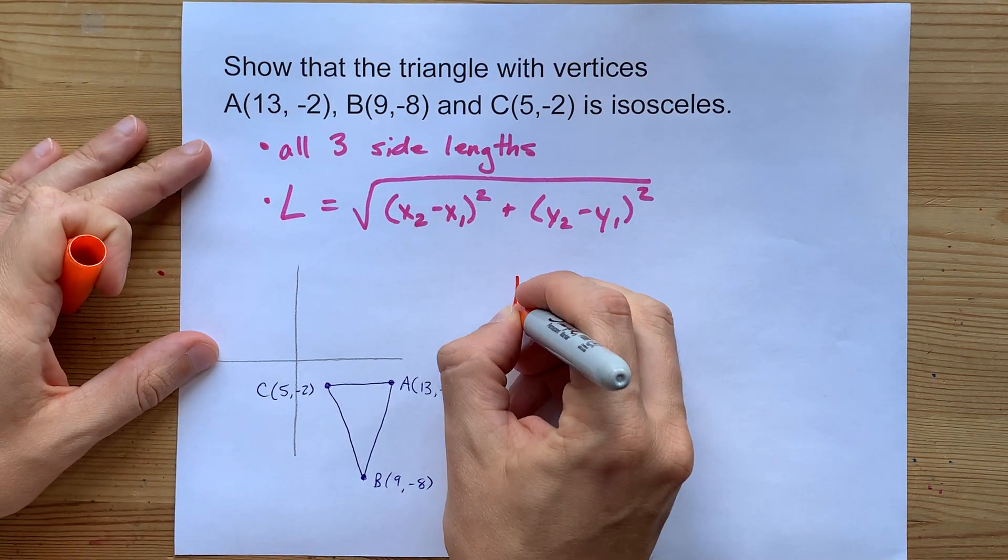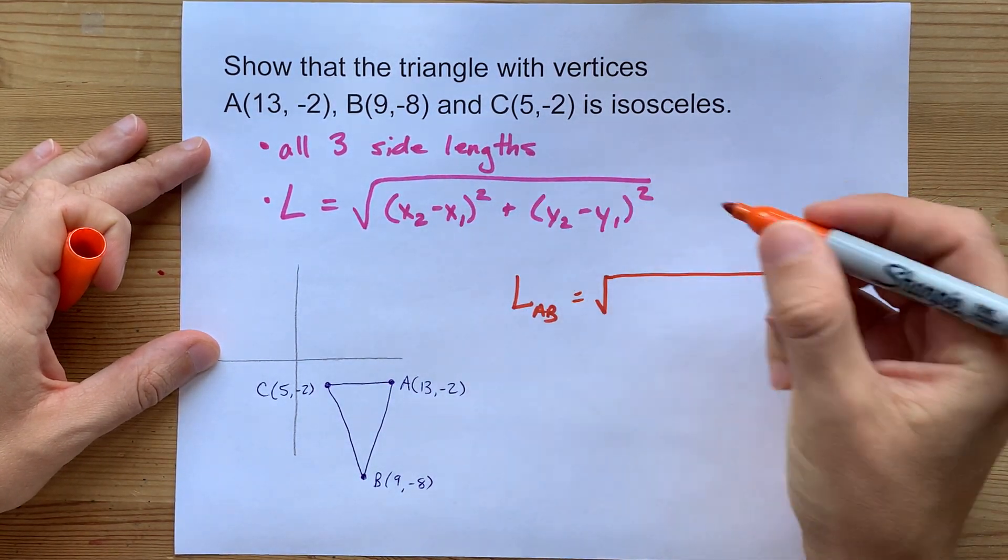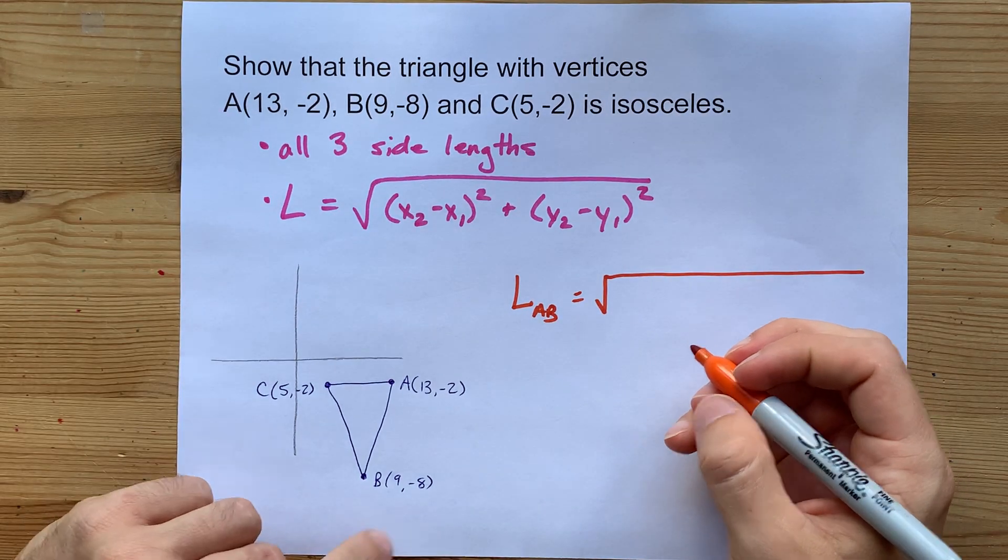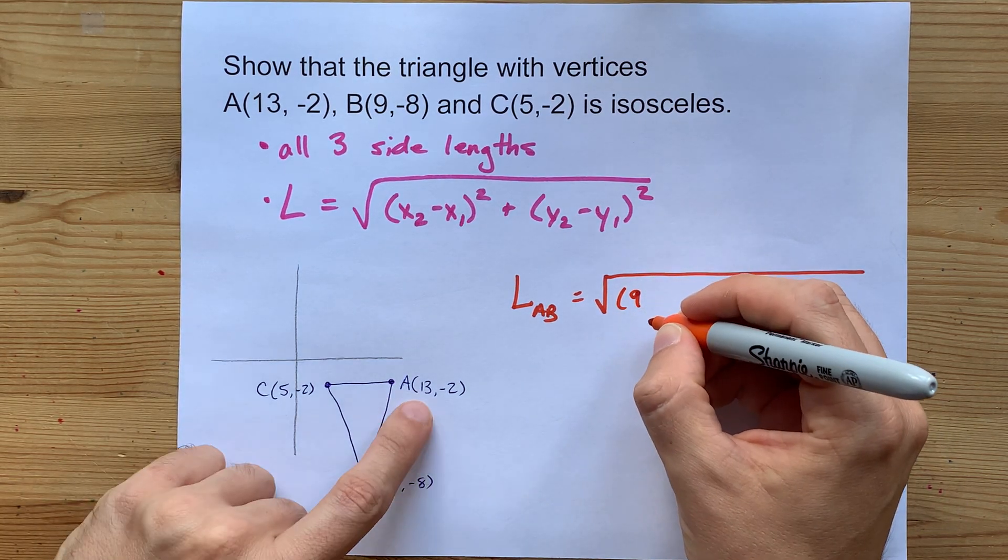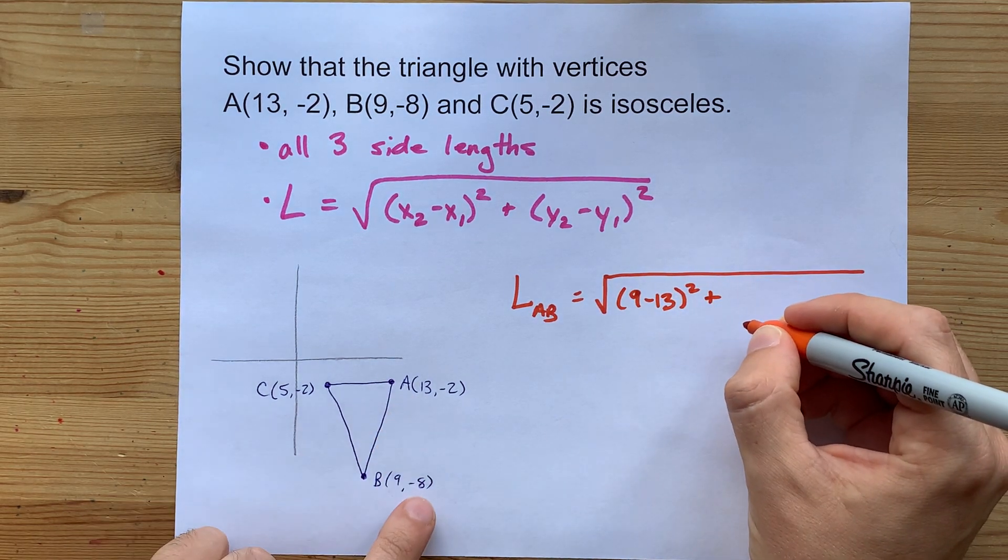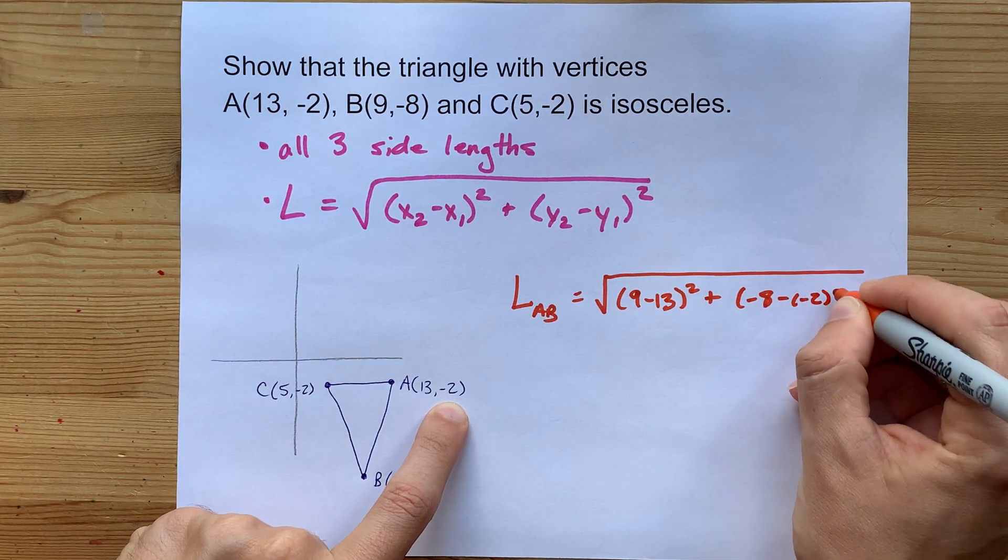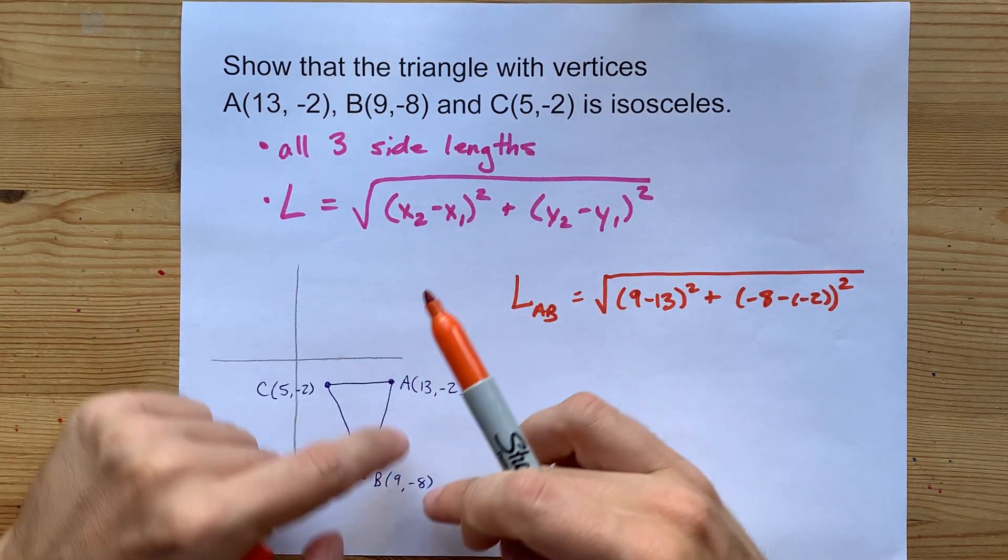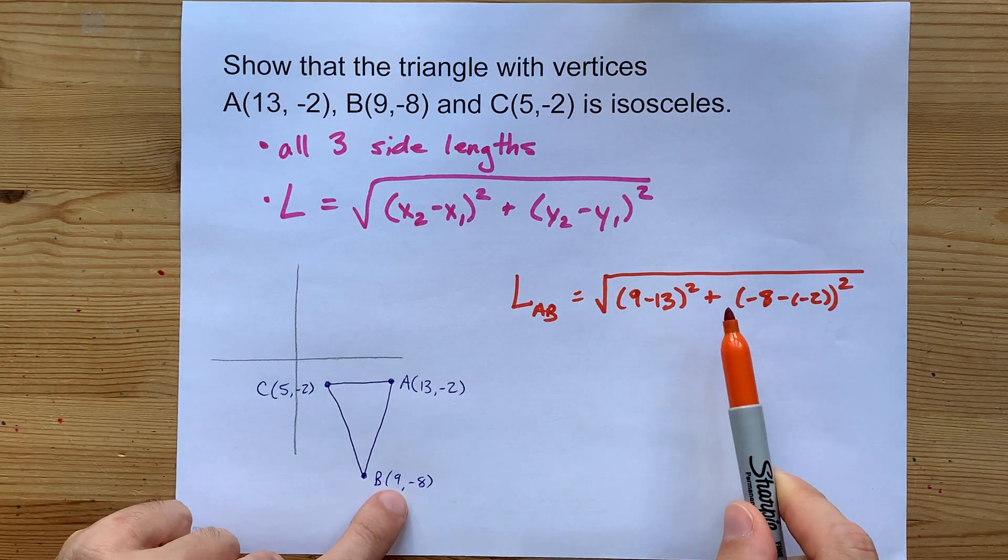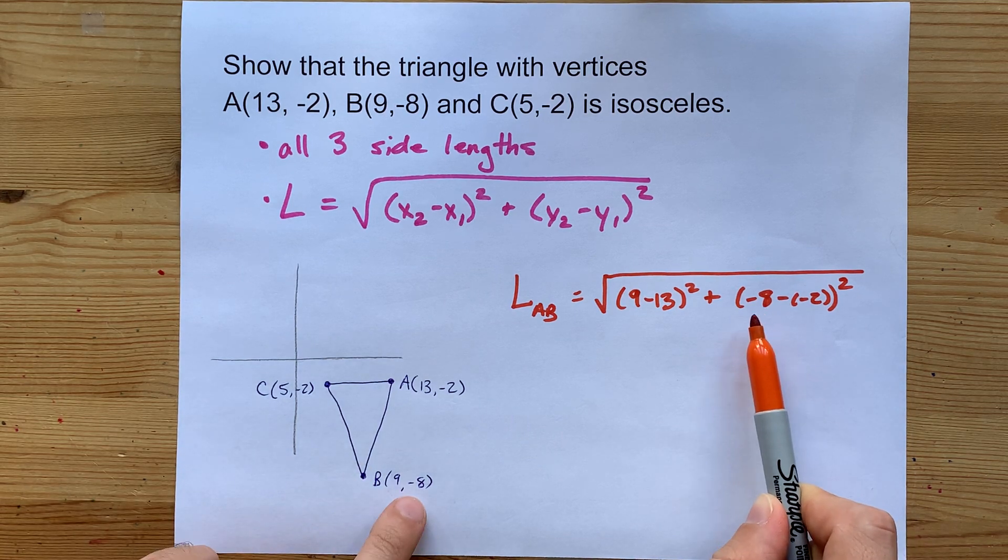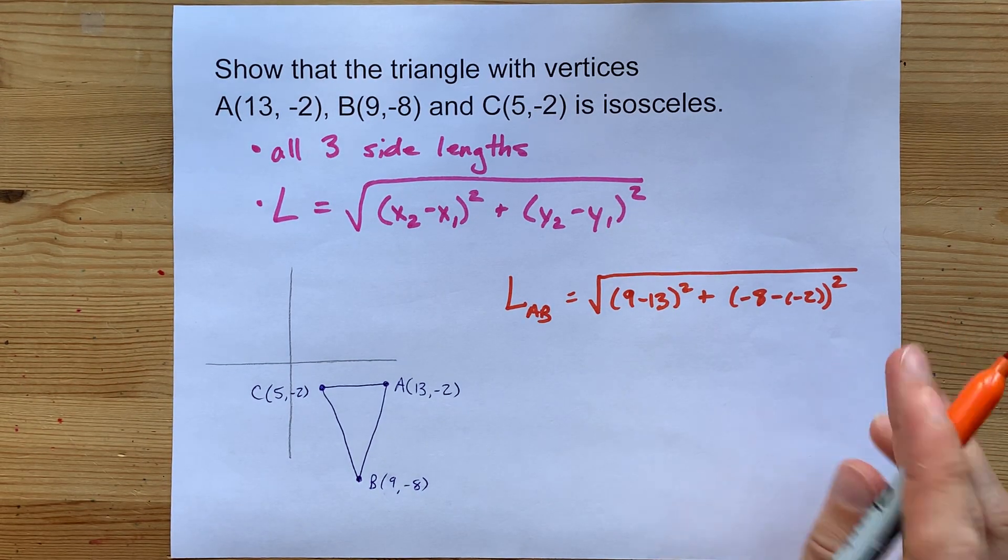Let's together calculate the length between A and B. Now, you might have to write out the whole formula for your teacher, but I'm just going to fill in the numbers. If I'm going from A to B, then my x2 is 9, my x1 is 13, my y2 is -8, my y1 is -2. Now fun fact: in this formula, if you accidentally switch around which one is 2 or 1, it doesn't matter. Just make sure both your x's are first (9 and 13), both your y's are next (-8 and -2). The squaring will get rid of any negatives that you accidentally caused to pop out.